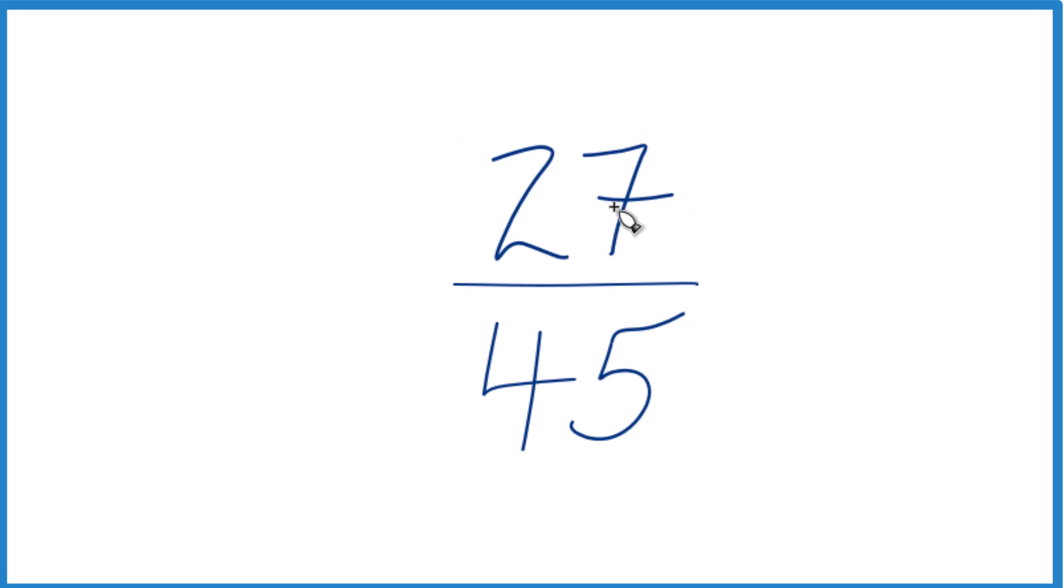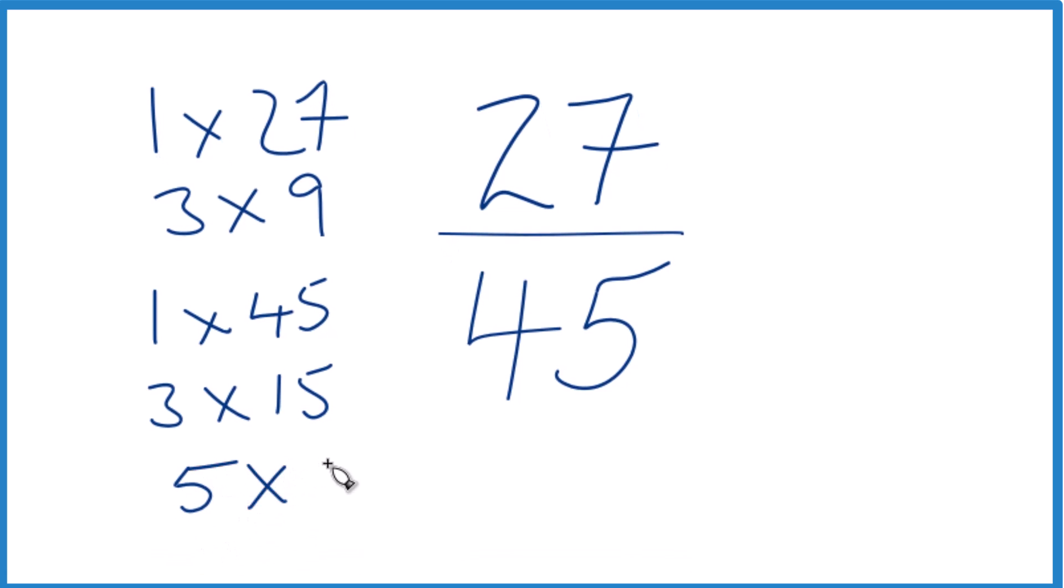So let's look at the factors for 27 and 45, see if we have something in common. 27: 1 times 27, that's 27, and 3 times 9. That's it for 27. 45: 1 times 45, 3 times 15, and then 5 times 9, that's 45.